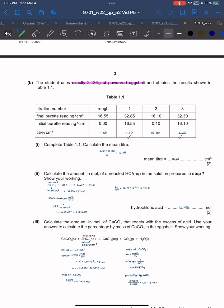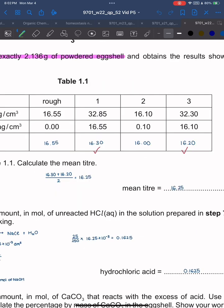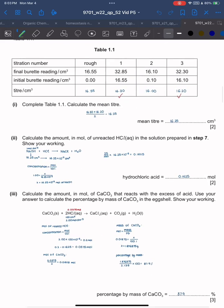The student uses 2.136 grams of powdered eggshell and obtains the results shown. To fill up the table, subtract the initial burette reading from the final burette reading to get the titer. Calculate the mean titer: pick titration 1 and 2 because there's only 0.1 difference. Add them and divide by 2 to get 16.25 as the mean titer.